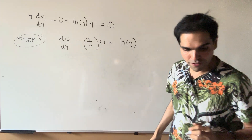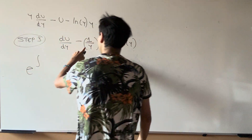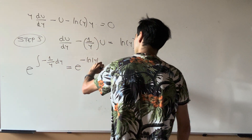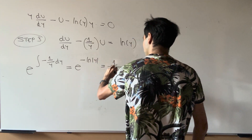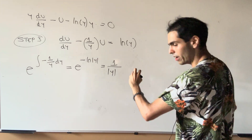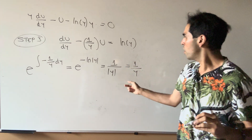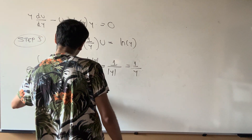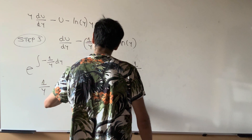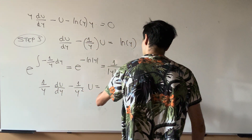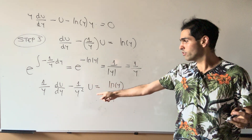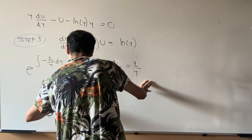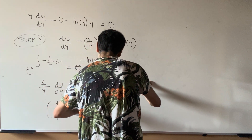We can write this in the form: du/dy minus (1/y)u equals ln(y). This is now a first-order linear differential equation for u, and we can use the integrating factor technique. The integrating factor is e to the integral of minus 1/y dy, which is e to the minus ln(y), and that becomes 1 over the absolute value of y. Since y is positive, this becomes 1/y. Multiplying the equation by 1/y gives: (1/y) du/dy minus (1/y²)u equals ln(y)/y. The beautiful thing is the left-hand side becomes a derivative — it is just d/dy of (u/y).